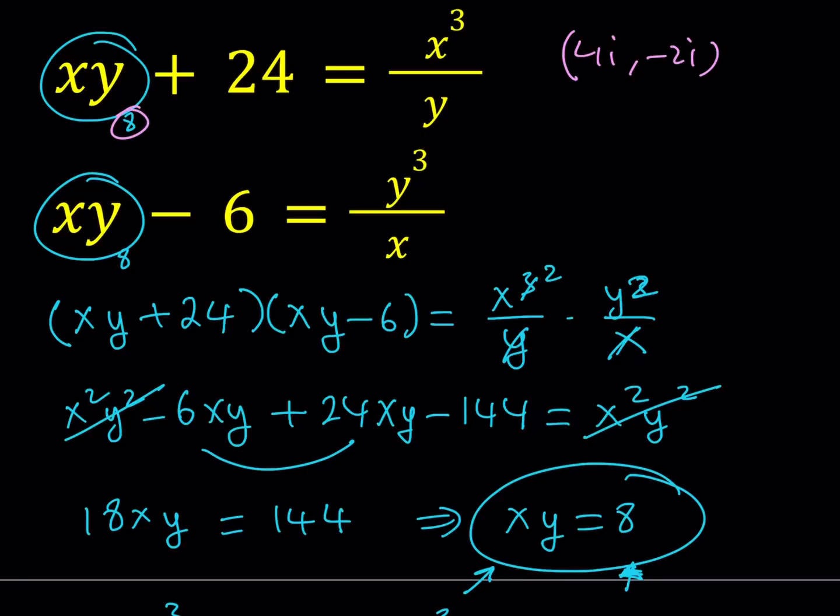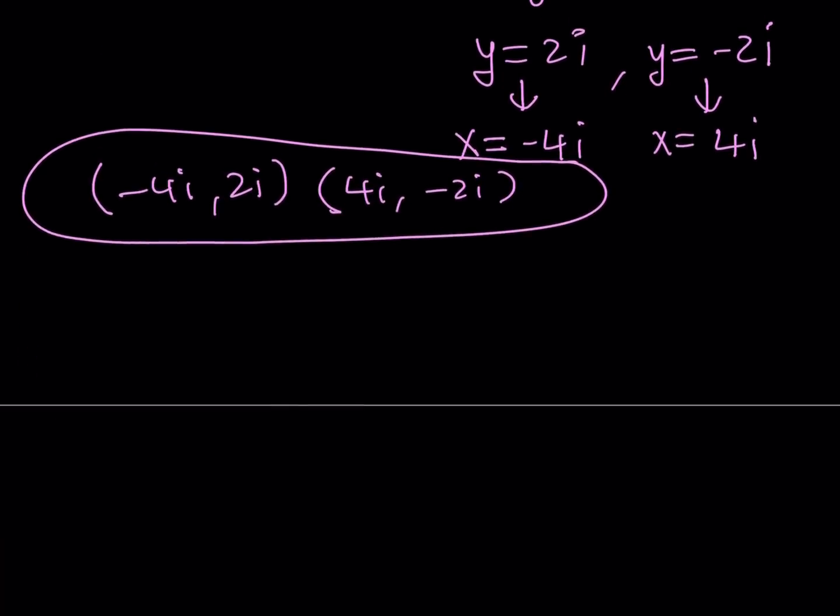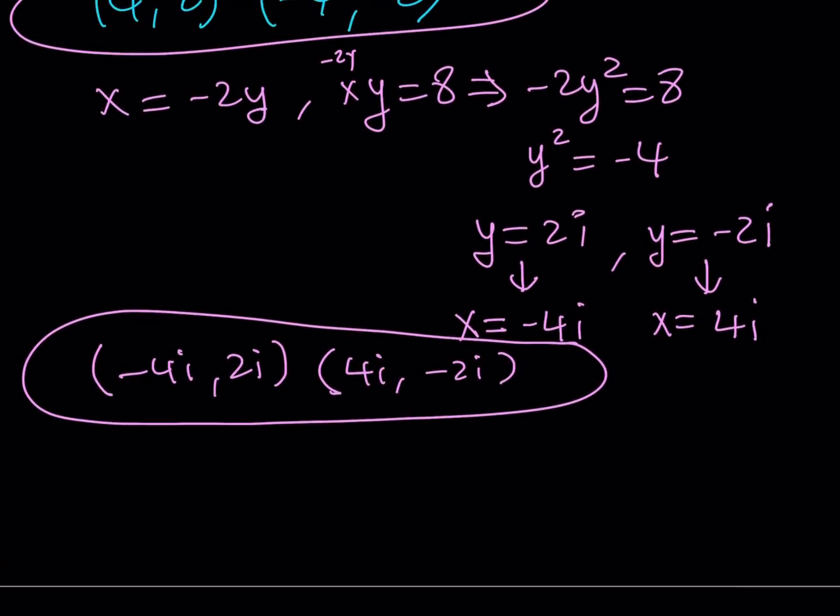And on the right-hand side, you get x cubed. If you cube 4i, you will get 64i cubed. And i cubed, by the way, is negative i. So you can replace it with negative 64i. And if you replace y with negative 2i, we're talking about negative 64i divided by negative 2i, and that should give you 32. As you know, 8 plus 24 is 32, so that satisfies our equation, which is pretty good. Well, it should, because we didn't really square both sides or something.